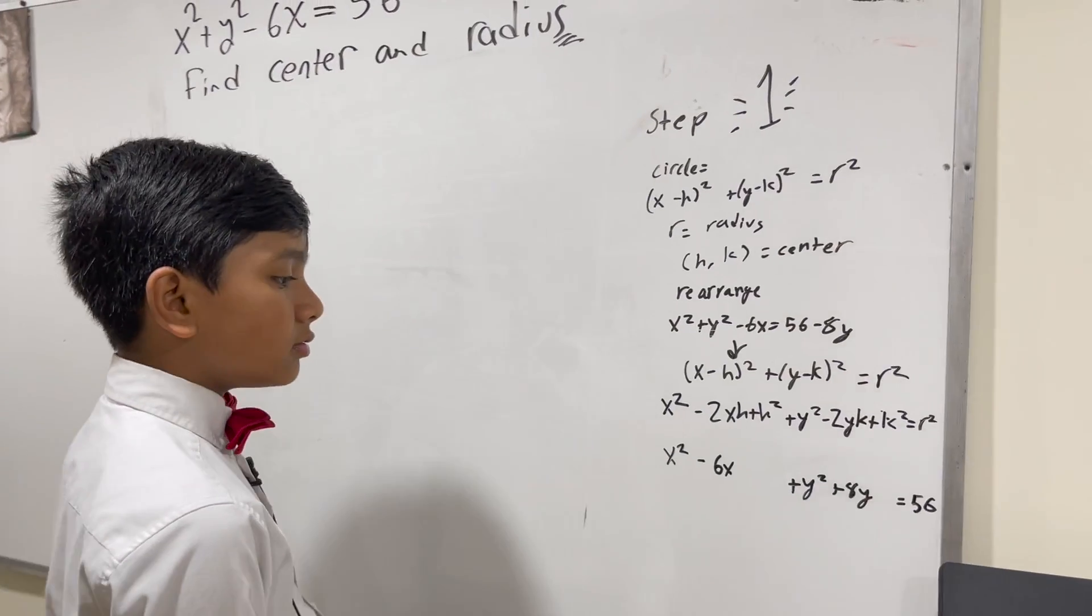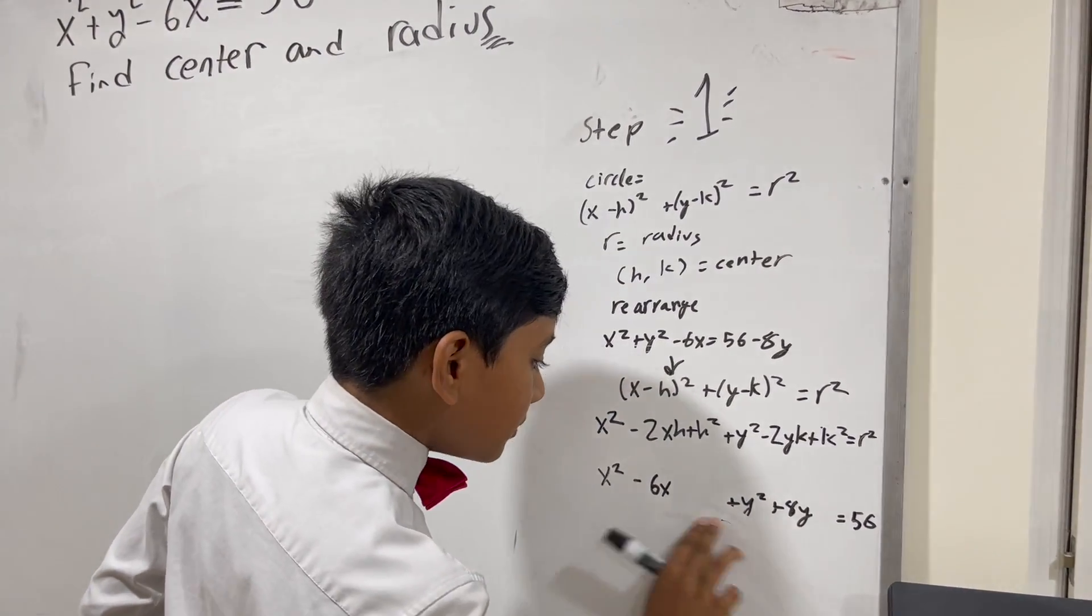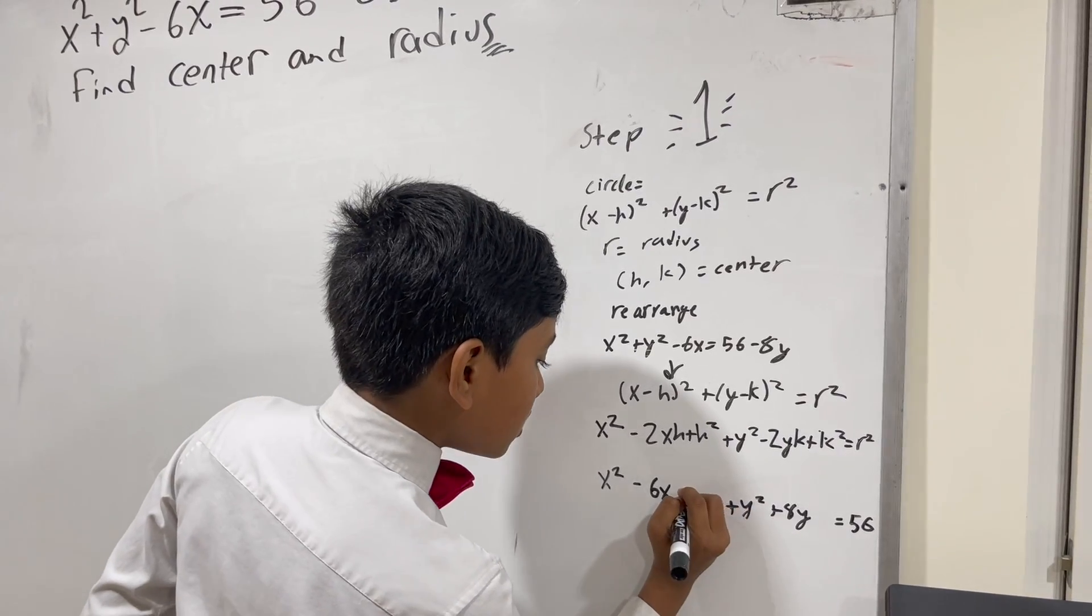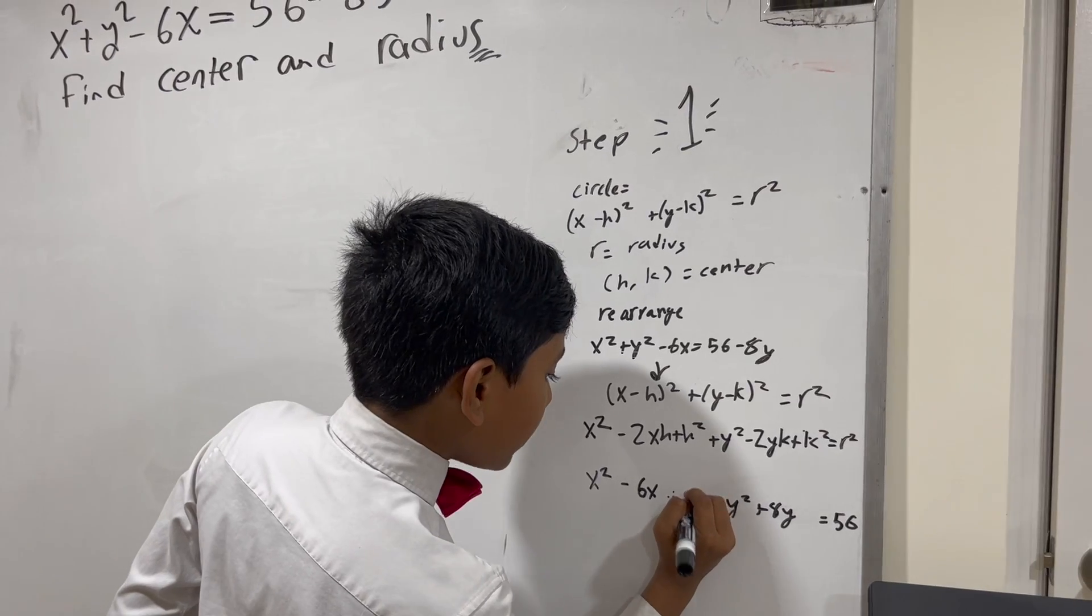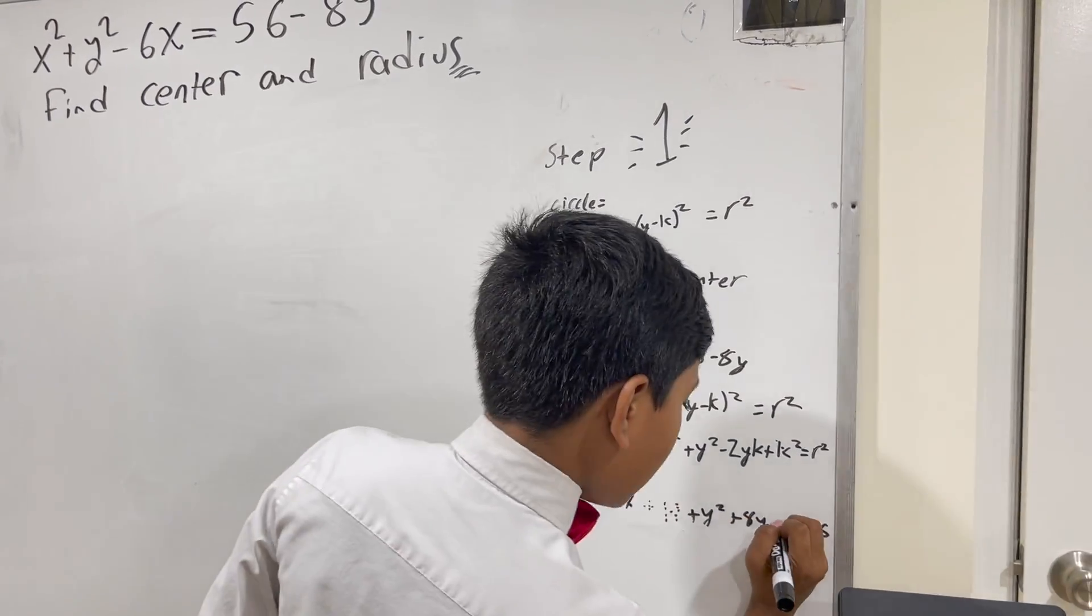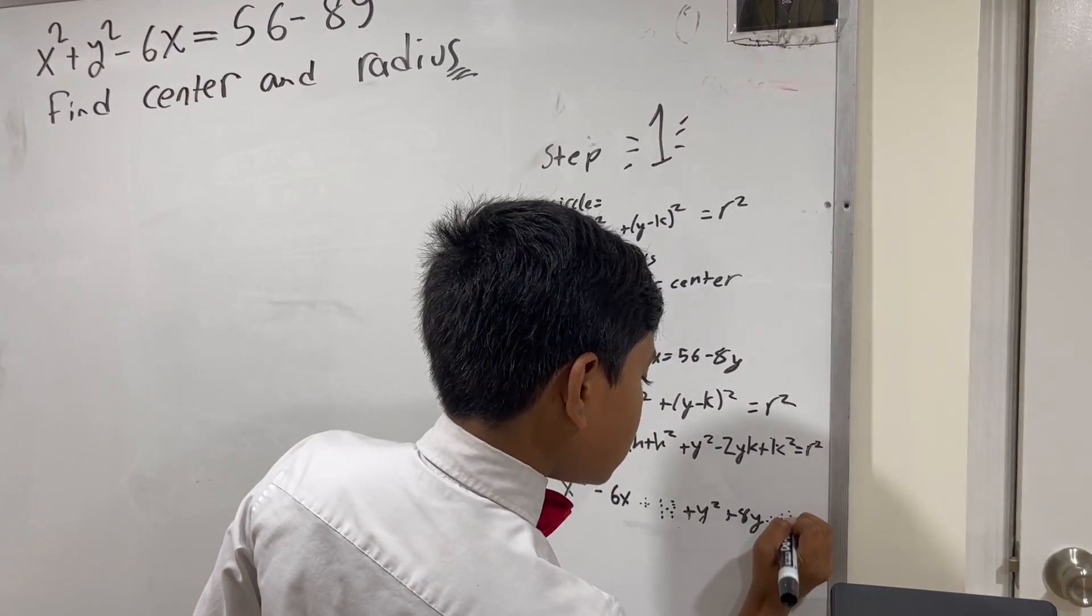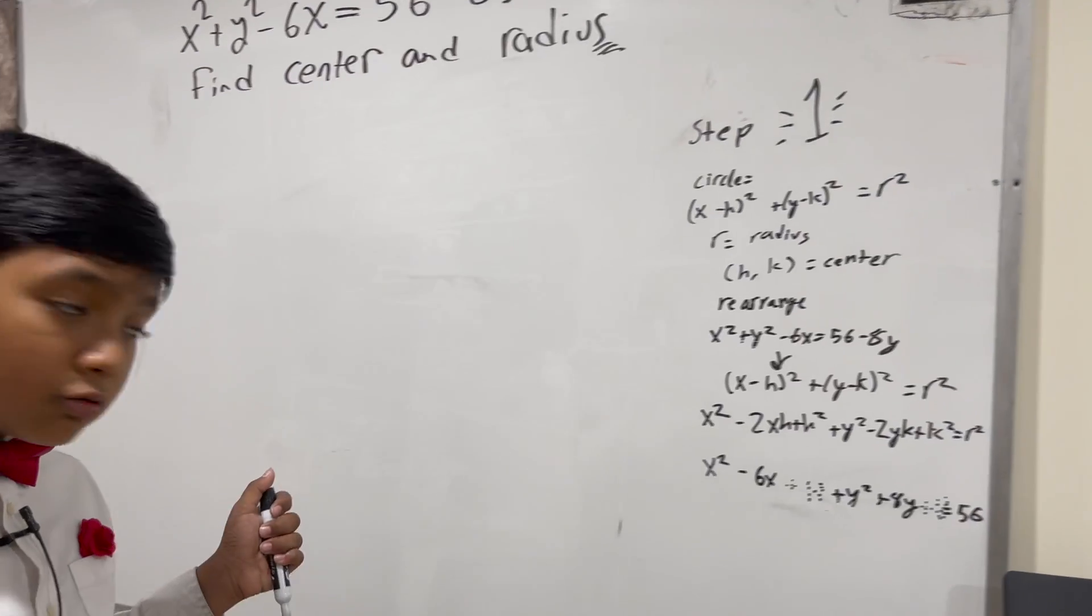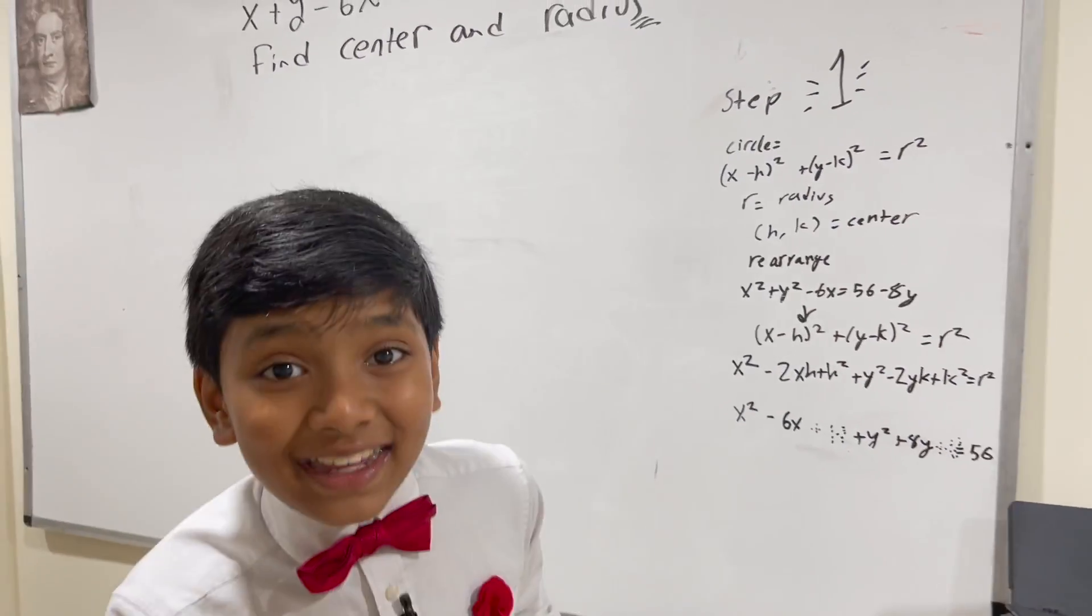So, now, you might notice that we're still missing two parts. We're still missing the H squared. And, we're also missing the K squared. So, how do we get those two? Well, it's really simple, and I'll show you that in step 2.